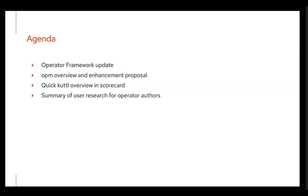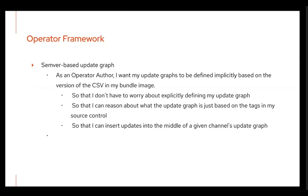The first item is a bunch of work that just landed to have a new type of update graph. If you're familiar with the model we have today, every version of a CSV — which is the manifest that has a bunch of metadata about your operator — says 'I've replaced this version' and you can also skip certain versions to get to me. That's an update graph where you have to explicitly create it for each CSV.